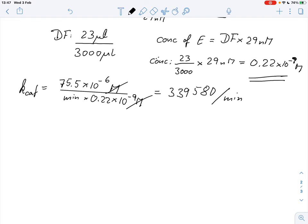But the usual unit for kcat is per second. So all we need to do in order to get this per second is we divide this number, 339,580, by 60 seconds. And we get something like 5,660 molecules per second.